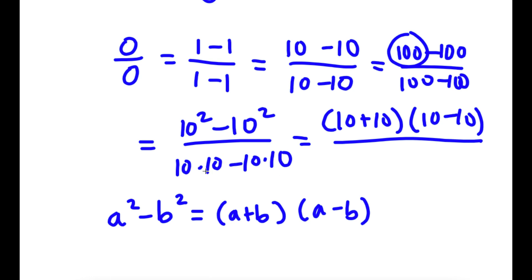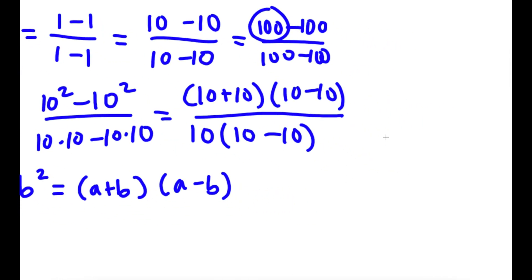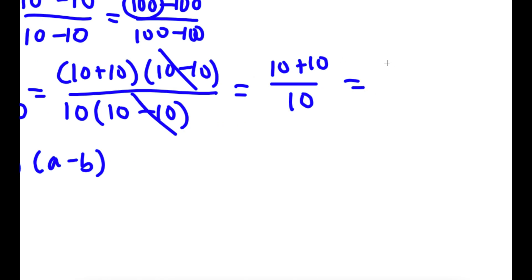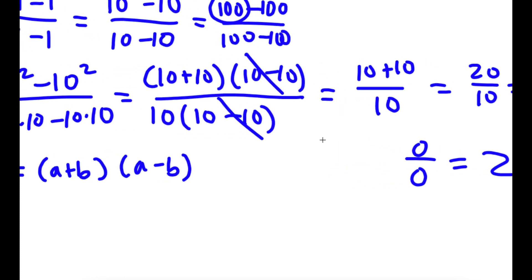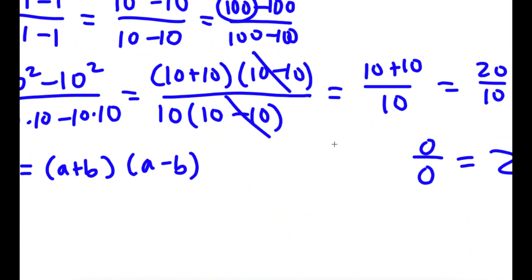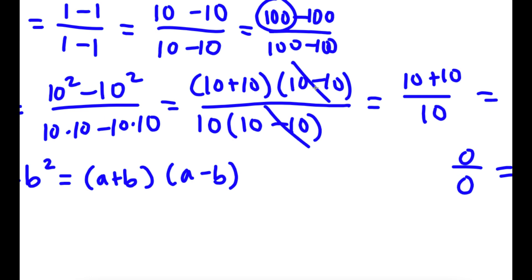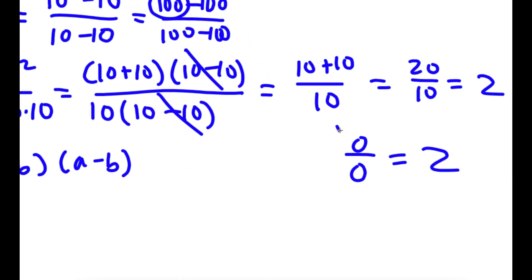So now I can cancel the two 10 minus 10 terms, and I'll be left with 10 plus 10 over 10. 10 plus 10 is 20, so I have 20 over 10, which is equal to 2. So I just proved that 0 over 0 is equal to 2. Now obviously 0 over 0 is not equal to 2. The mistake in this proof is right here, when I canceled out 10 minus 10 over 10 minus 10. What is 10 minus 10? It's 0. So I'm technically canceling out 0 over 0, and 0 over 0 is not equal to 1. I can't cancel these out because that implies 0 over 0 is 1, which it's not. So that's the mistake in this proof, and 0 divided by 0 is not 2.